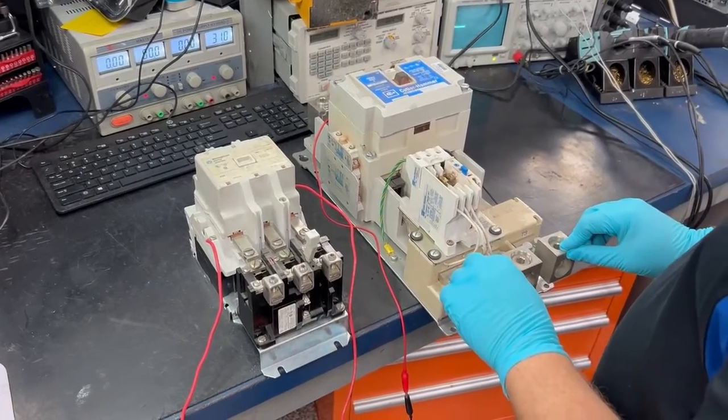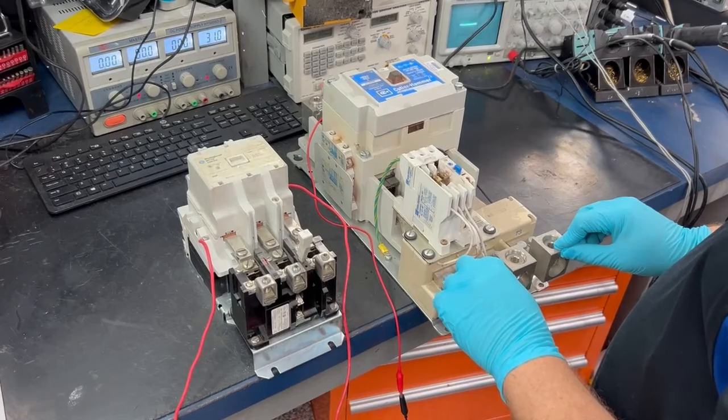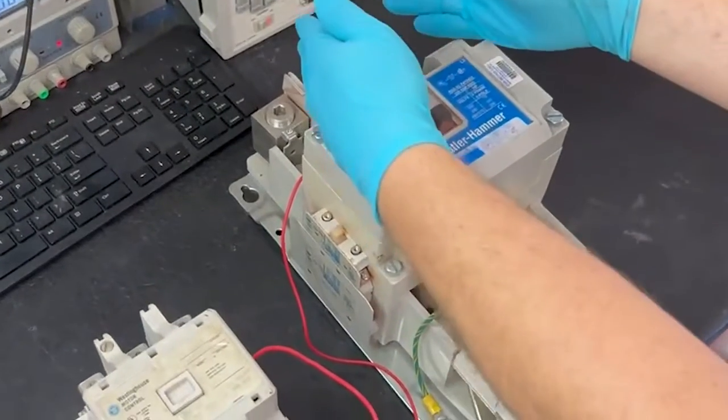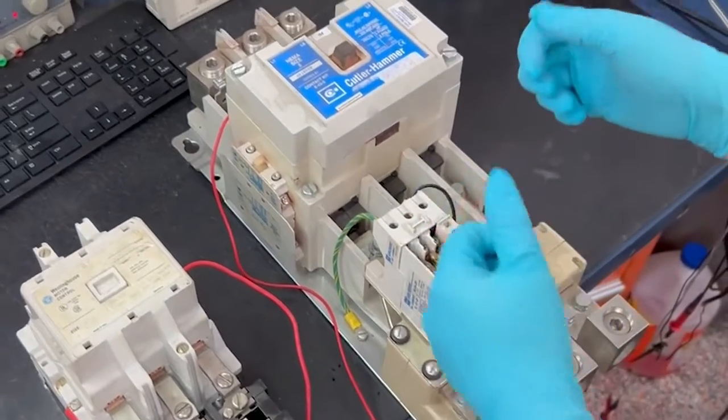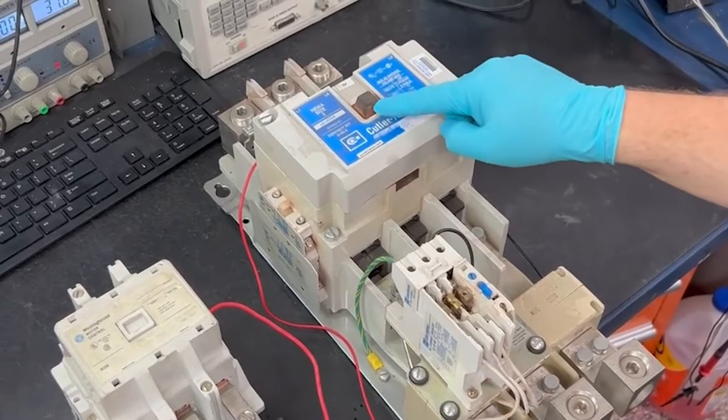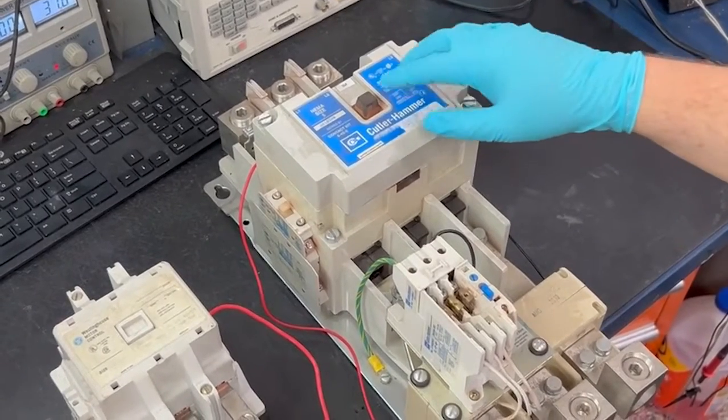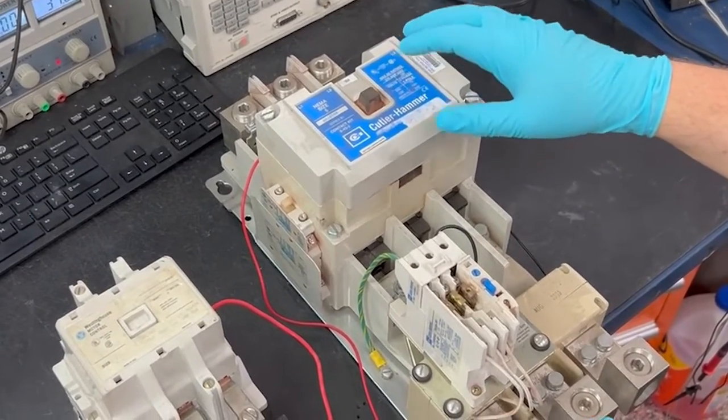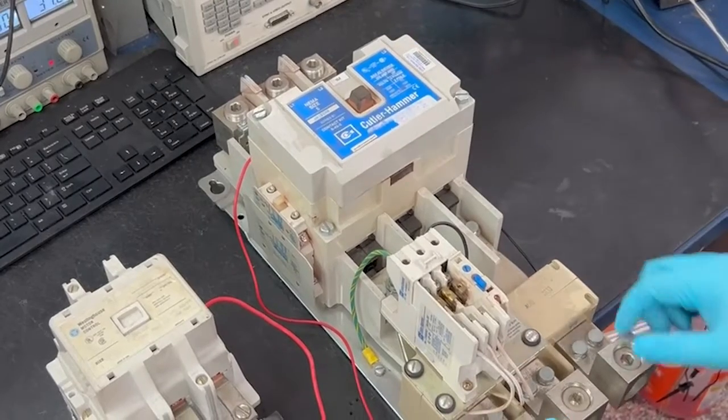We will show the mode of failure that many report as chattering. Chattering happens when the contactor tries to pull in, allowing power to pass. Rather than make complete contact, the contactor will be noisy, creating a lot of vibration and chattering. We will now demonstrate that.